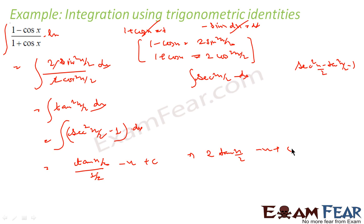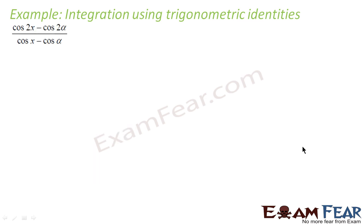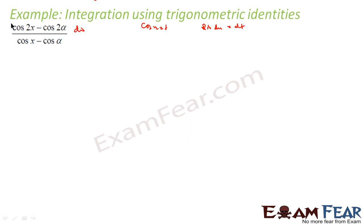That is the case where we applied formulas to make our life simple. Now we have to integrate (cos 2x - cos 2α)/(cos x - cos α). Here also it is difficult to apply substitution, because even if you take cos x as t, you get sine x dx = dt, and we do not have a sine x component in the integrand. So we will apply trigonometric formulas.